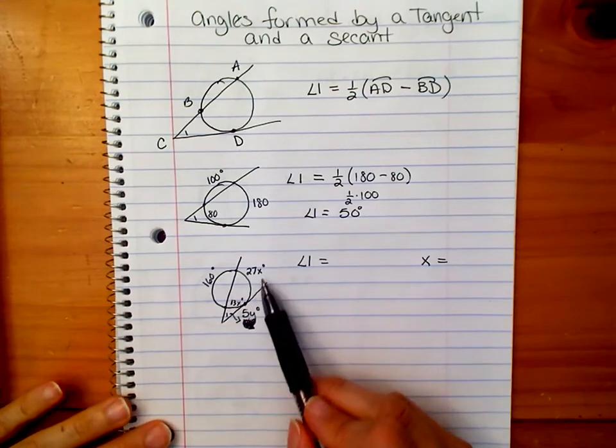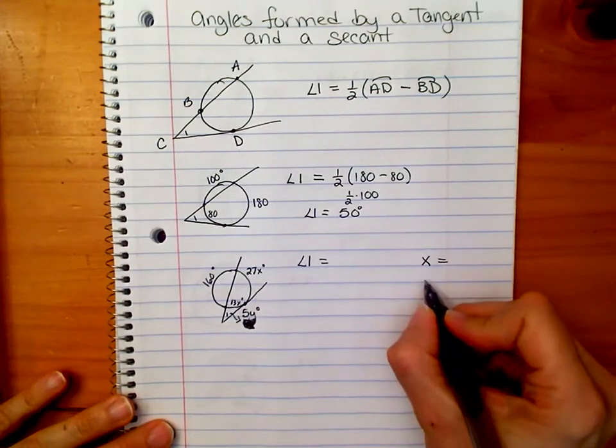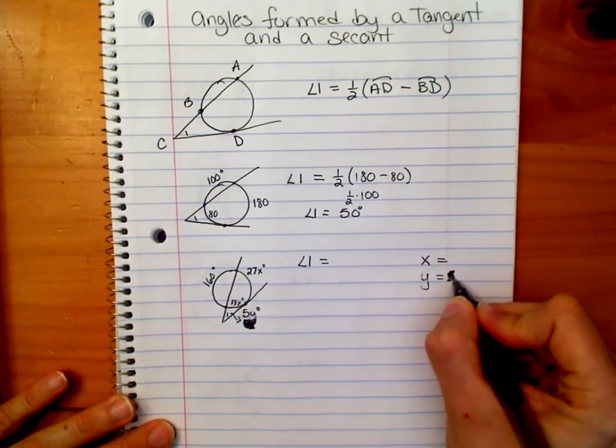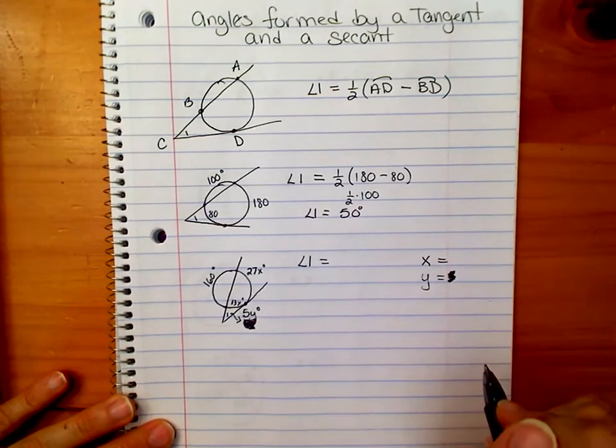Now this one's a little bit trickier because we have x's and y's, and I did want you to find y too. Oops, I didn't want you to know that it's 5. I don't think it is, but it might be.